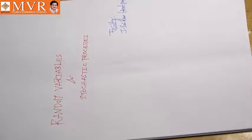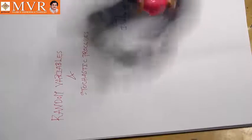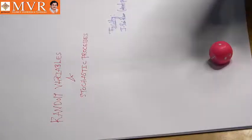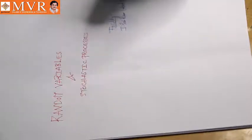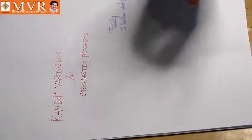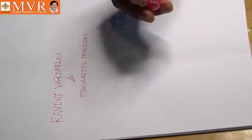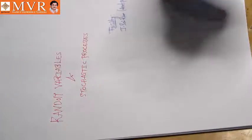Before moving on to the random variable, let's see the concept of probability. You already know probability. Probability means if I give you a dice and roll it, some students will say it will be 1, 2, 3, 5, 6 — different students have different thoughts. If I roll the die once, it could be 1, 3, 5, or 6 — we can't predict the output.